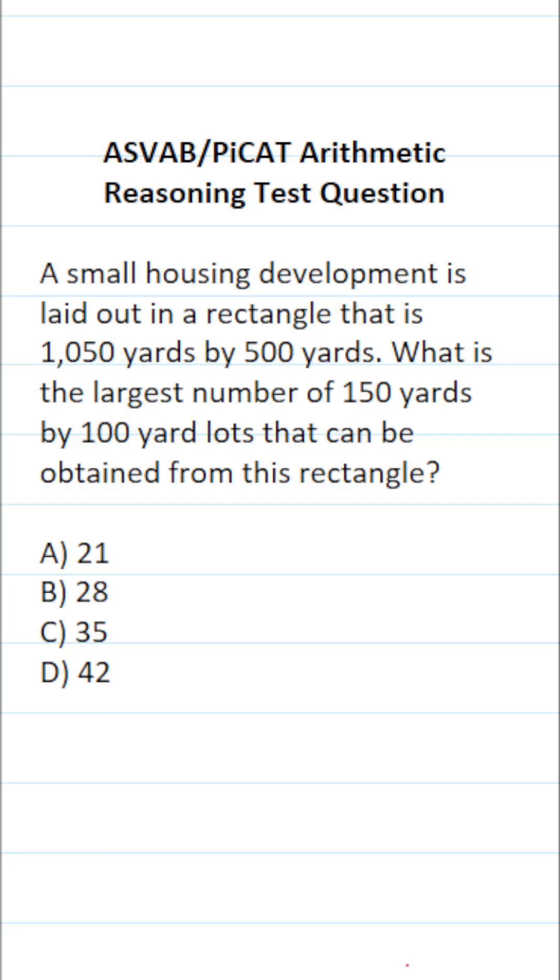So in order to determine the number of lots we can create from this big rectangle, we're going to take the area of the big rectangle. Area of a rectangle is length times width, and we're going to divide it by the area of each of the smaller rectangles, that is the lots. Those are both length times width.